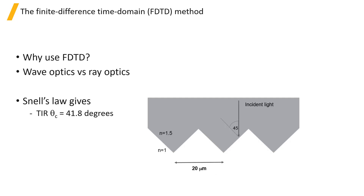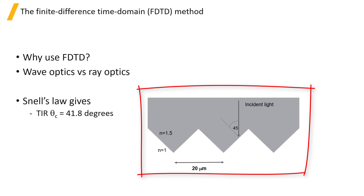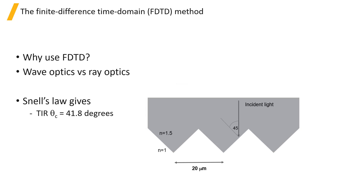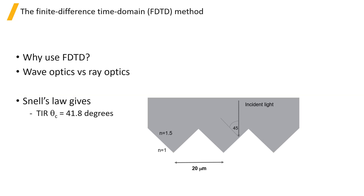A simple example where we can see the difference between wave optics and ray tracing is this triangular pattern etched in a material with a refractive index of 1.5. This type of structure is commonly used as an efficient reflective coating because light is always incident at 45 degrees to the normal, which is above the critical angle for total internal reflection, and therefore we expect the device to reflect 100% of the incident light.